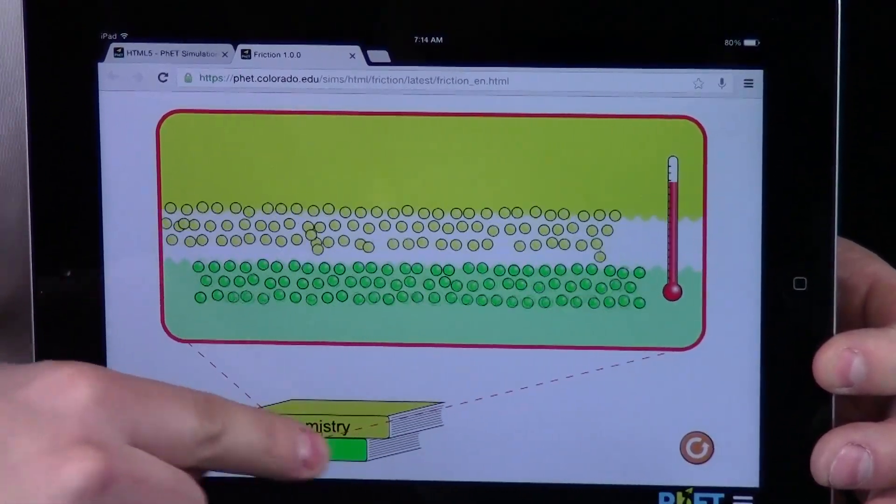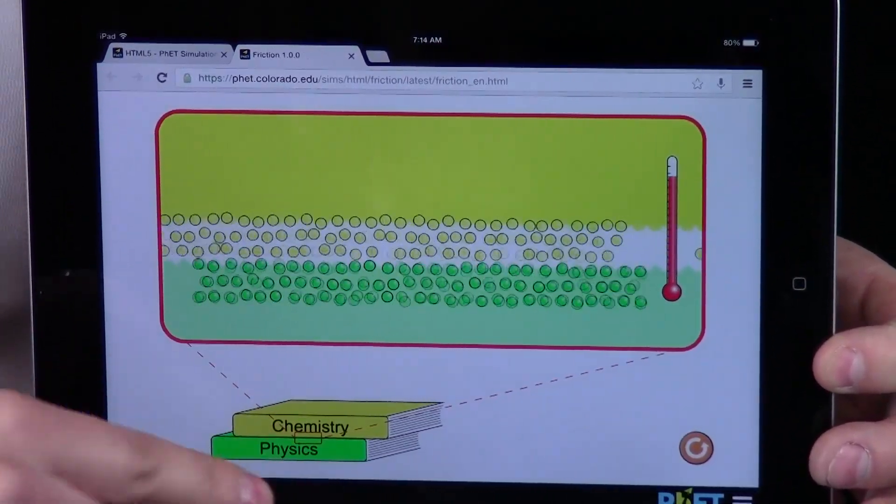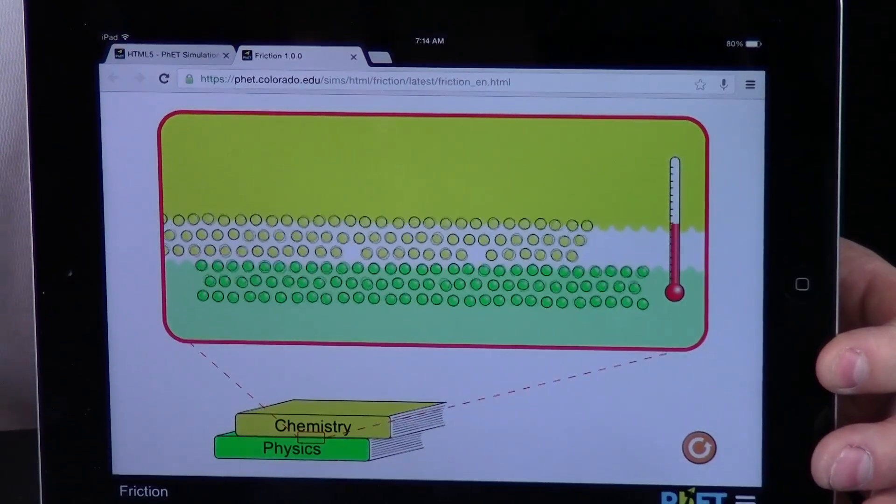The temperature goes down. A nice little simulation to see what is going on and why my hands warm up when I rub them together. Friction.